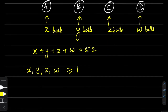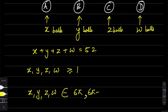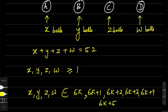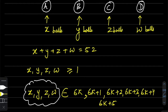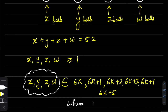If there is any number you want to write — like X, Y, Z, or W — we can express any number in the form 6k, or 6k+1, or 6k+2, or 6k+3, or 6k+4, or 6k+5. So any integer or natural number X, Y, Z, W can be one of these six residue types.